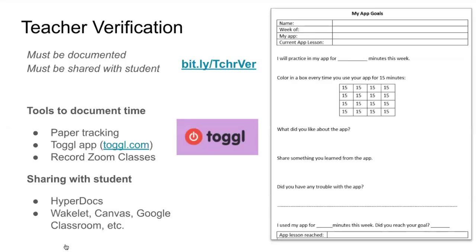Since we're usually in a blended learning environment, students will meet with the teacher again and talk about the goals they had, whether they reached the time amount they hoped for, and talk about their learning to verify they completed the activity. Lately, with emergency completely remote learning, a lot of our teachers are doing live classes through Zoom. One recommendation to keep things documented is to record your Zoom class — when recorded, you have a record of how much time you spent with students in that live class.